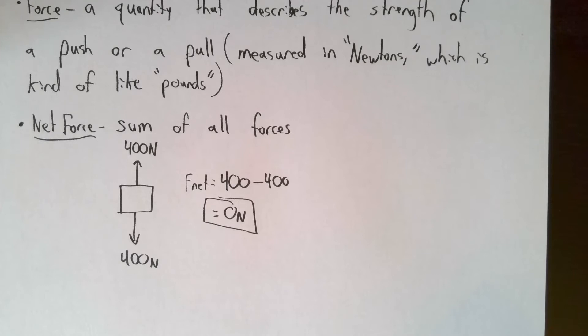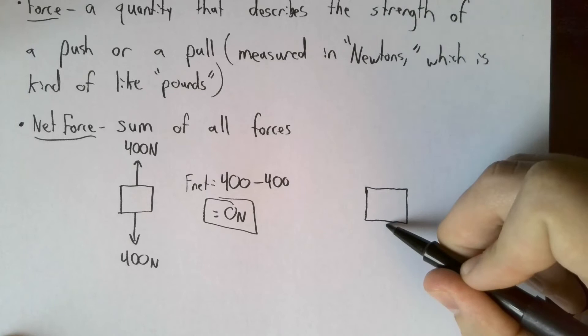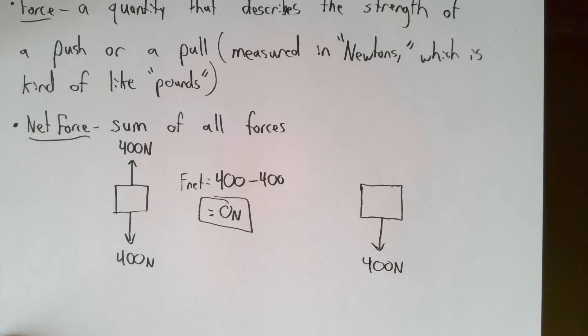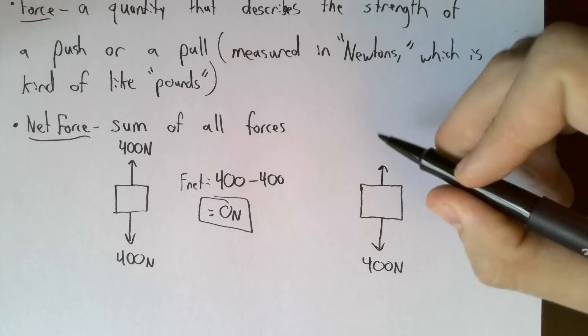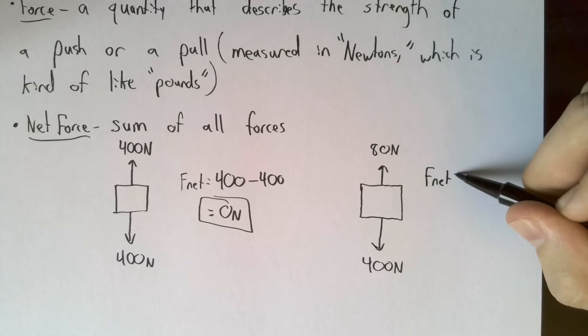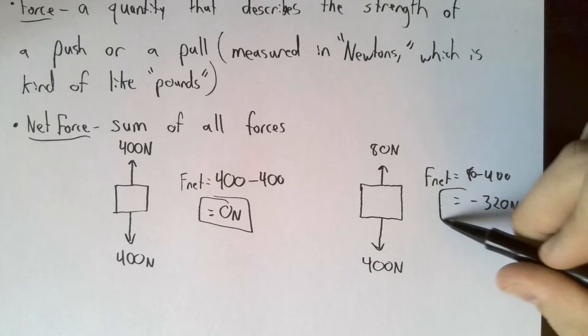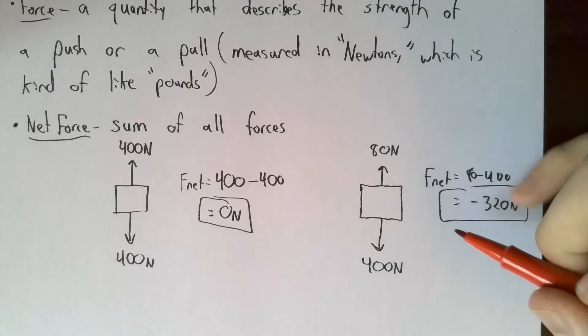But maybe one is larger than the other. Maybe you've got a skydiver. Maybe the same person is skydiving. Gravity's pulling down on them with 400 newtons, but air resistance is only pushing up with 80 newtons of force. This would probably be near the beginning of their fall. In this case, F net would be 80 minus 400. So that would be negative 320. We call this a non-zero net force.